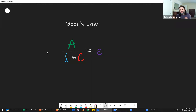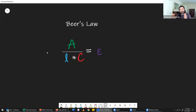The width of the container is known as the path length — it's an actual distance you can measure. If the path length gets wider, there are more solute particles for the light to travel through. So as the path length gets bigger, the absorbance also gets bigger. Just like concentration, the path length is directly proportional to the absorbance.